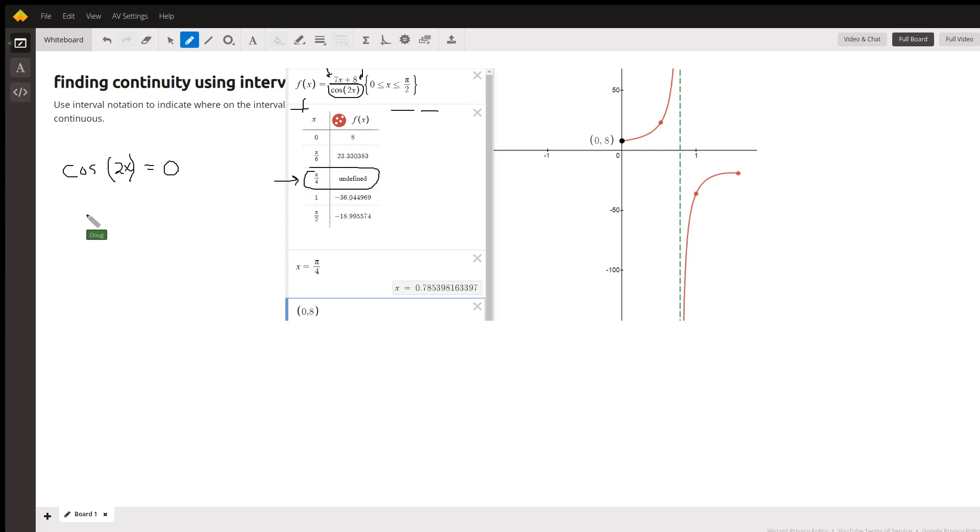How do you solve this equation? Well, 2x equals the angle that has a cosine of zero, or the inverse cosine of zero, or the arc cosine of zero. Where is the cosine zero?